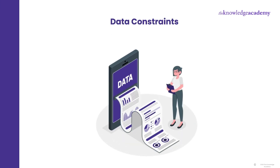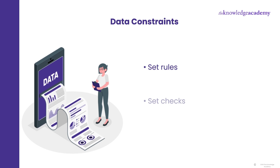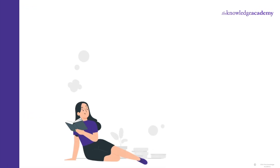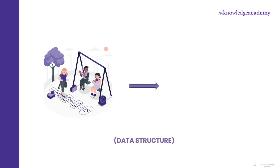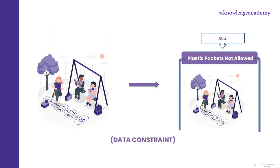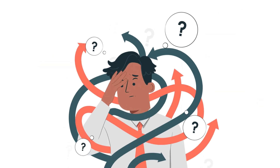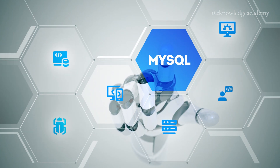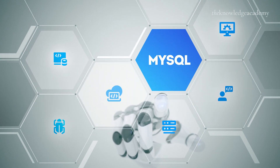Next up is data constraints. With SQL, you can set rules and checks to keep things in line. Unlike data structure, here we set rules which must be abided by. Picture the database as your playground — data structure is like defining the shape and size of the playground, and data constraints are the rules you set. For example, you set a rule that plastic packets are not allowed inside the playground. Each rule acts as a guardian angel, ensuring your data stays clean and accurate. Without these rules, your data could end up messy, inconsistent and full of errors.